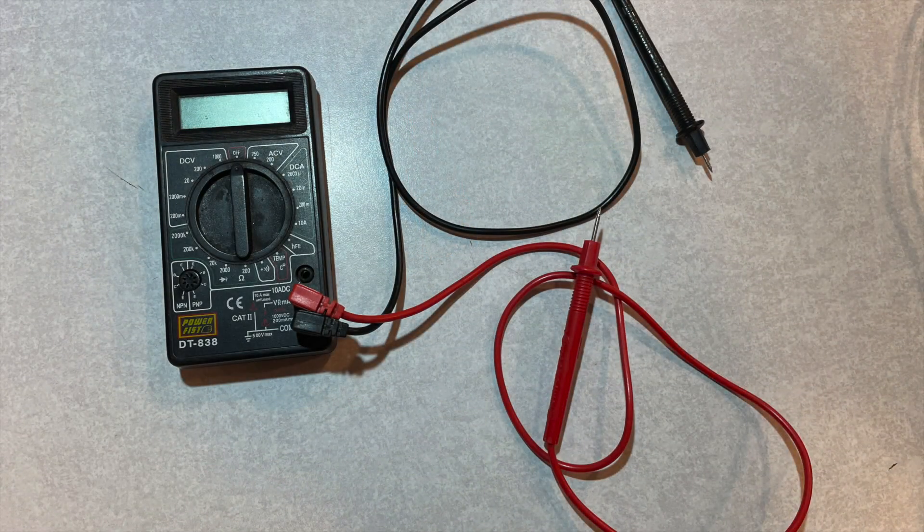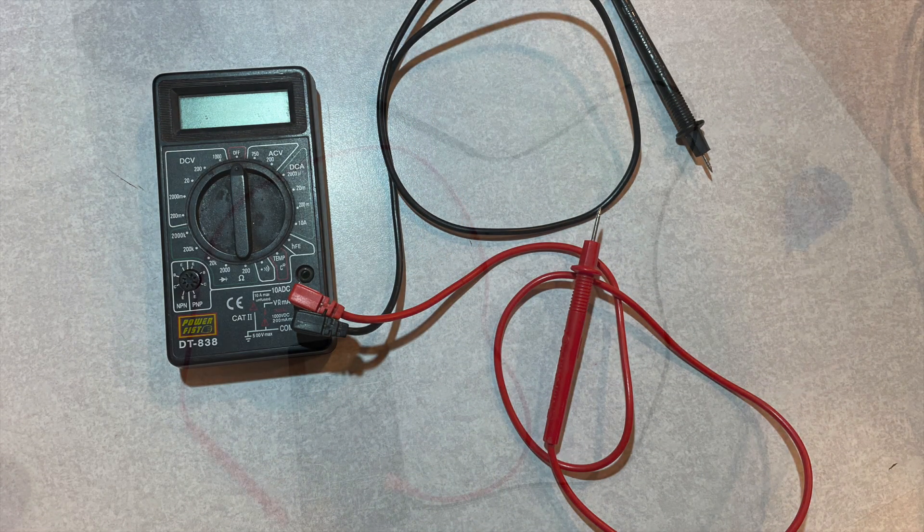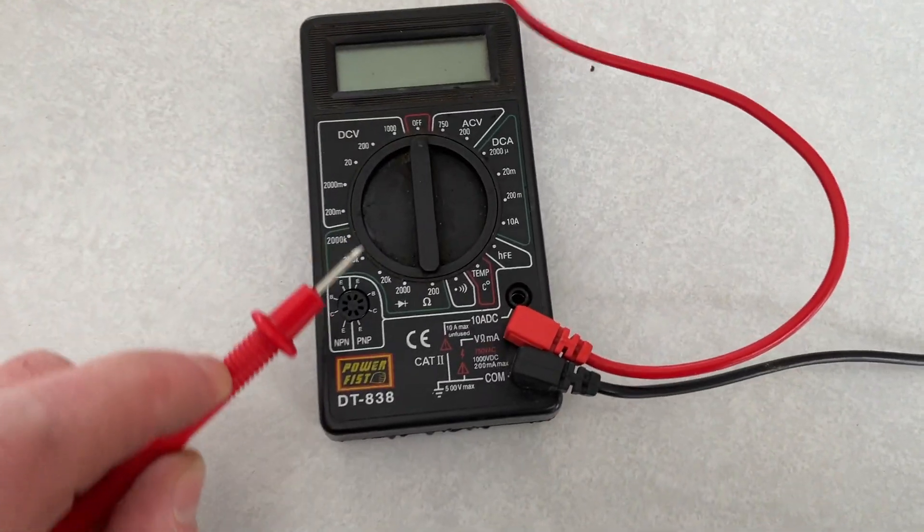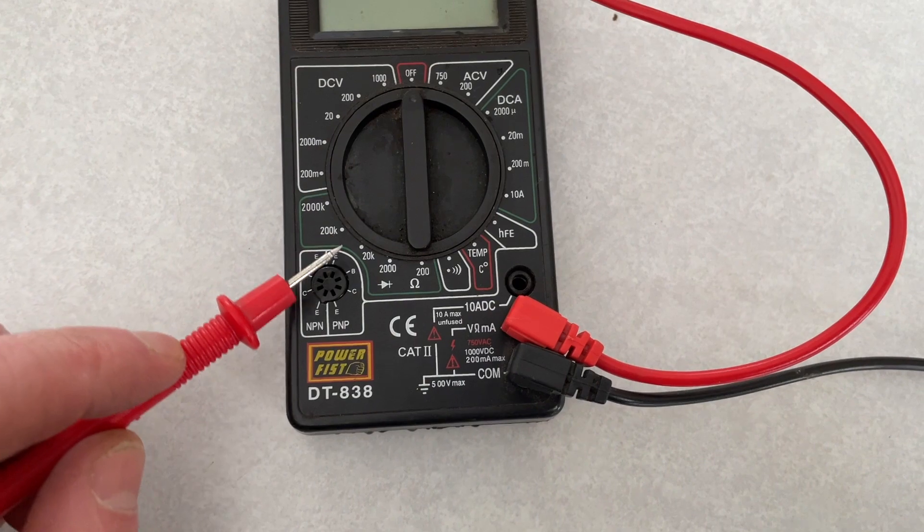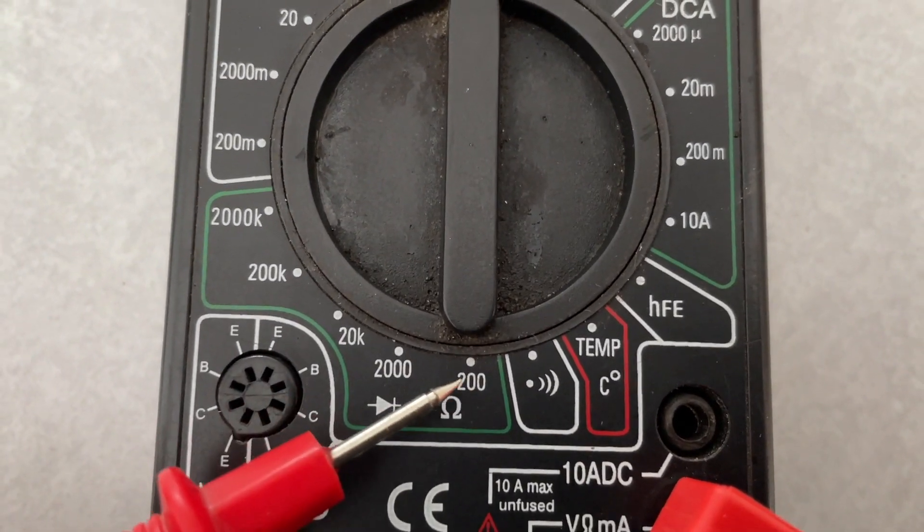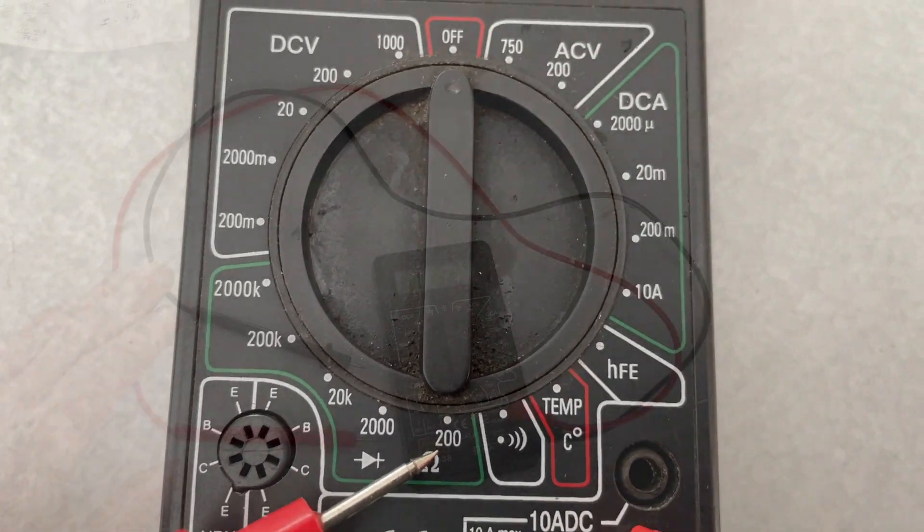A useful device to troubleshoot problems is a multimeter. The multimeter has to be set to measure resistance in ohms. You will see an omega symbol on your meter. With this multimeter if I set it to 200 it will give you a reading from 0 to 200 ohms.